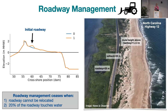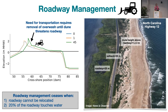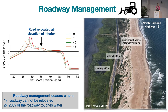For roadways, we first initialize a roadway in the Barrier 3D domain — just a cross-section of the 3D domain. As the dune migrates towards the roadway, we continue to remove overwash and place it back on the dune, just like our DOT does in North Carolina. We do this until the dune threatens the roadway, then we relocate the roadway into the interior at the elevation of the barrier. We stop management when the road can't be relocated — when there's only wetlands and no land to relocate to, or when 20% of the roadway touches water.